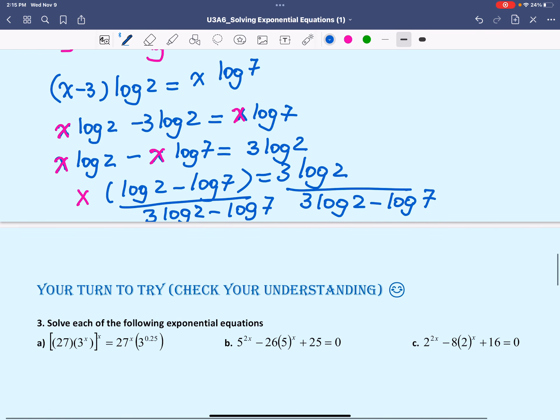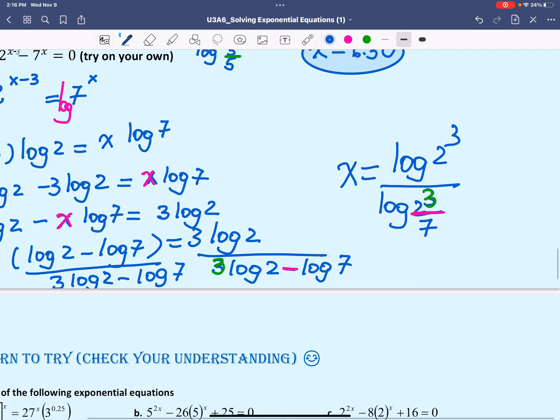What we're going to get is x equals 3 log 2. Remember, 3 log 2 is going to be log 2 to the power of 3. And down here we have log 2 to the power of 3 divided by 7, divided by 7 because of the subtraction. 2 to the power of 3 is because 3 will come inside as a power of 2. In a more simplified form, this would be log of 8 divided by log 8 over 7.